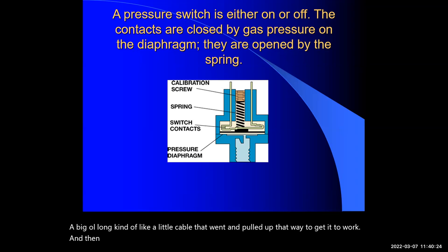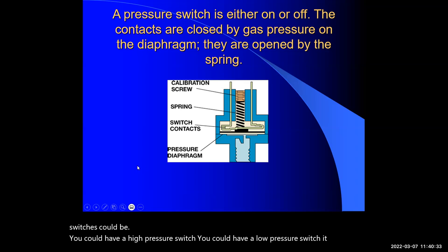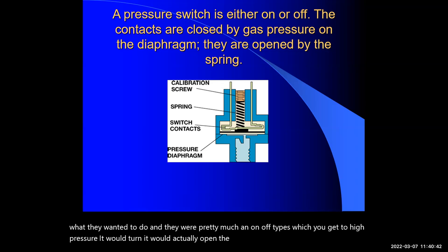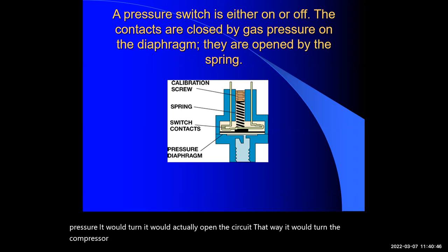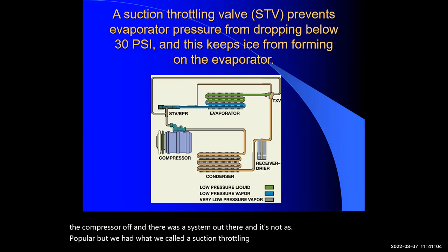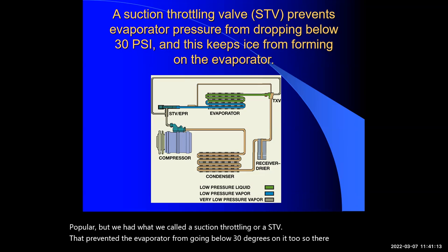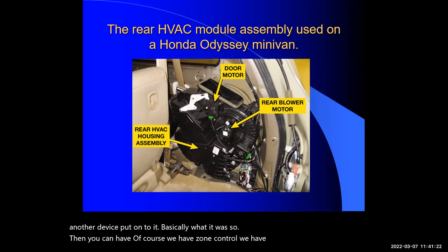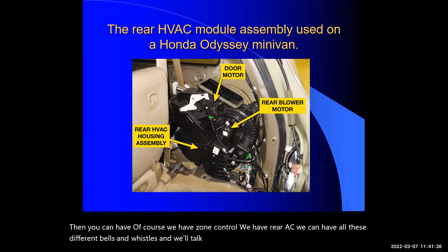There are also all kinds of pressure switches. You could have a high-pressure switch or a low-pressure switch — pretty much an on/off type switch. If it gets too high a pressure, it opens the circuit and turns the compressor off. Same with a low-pressure switch — when it goes too low, it turns the compressor off. There was also a device called a suction throttling valve, or STV, that prevented the evaporator from going below 30 degrees. Now we also have zone control, rear AC, and all kinds of different features, which we'll cover more in the electronics section.